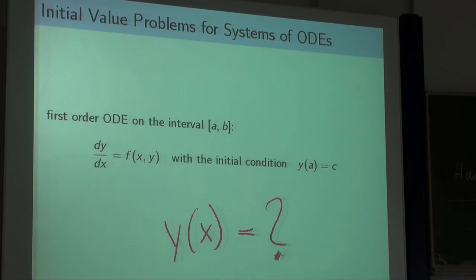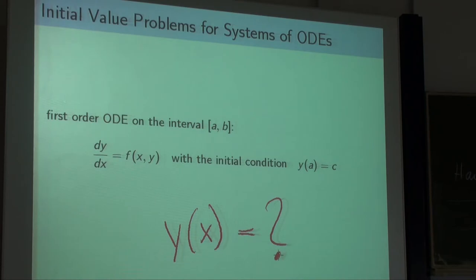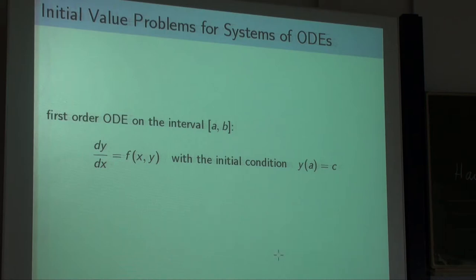For a first-order differential equation we also need an initial condition — we need to know one value of our target function y of x, typically at the starting point a, the left end of the interval. But this is not strictly necessary; you can take any point in the interval.